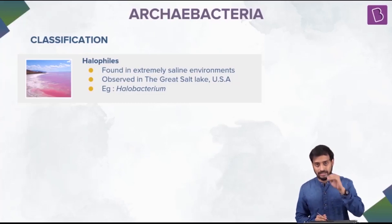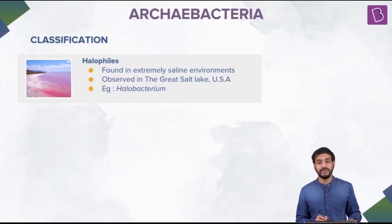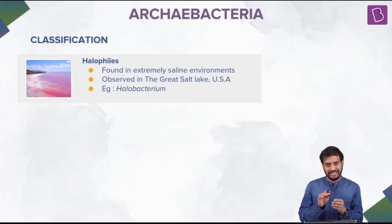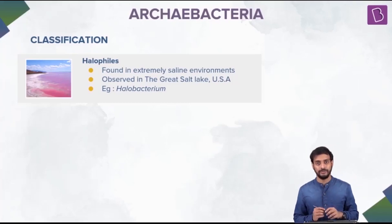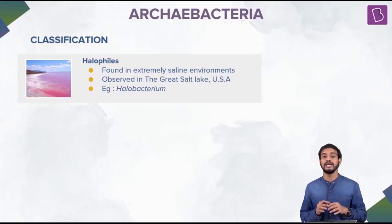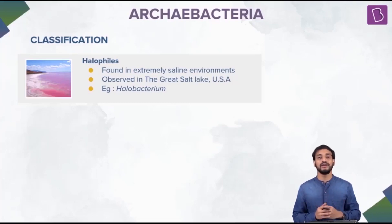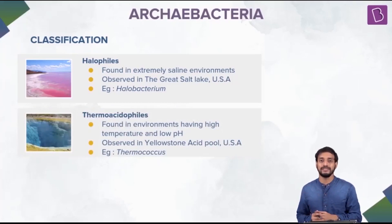Halophiles are found in extremely high salt or saline concentrations. One example is the Great Salt Lake in the US, and a species example is Halobacterium. As you can see in the diagram, some halophiles show a reddish tinge. They have a pigment called carotenoid, which gives them this color and helps protect the cells from harmful solar radiation.